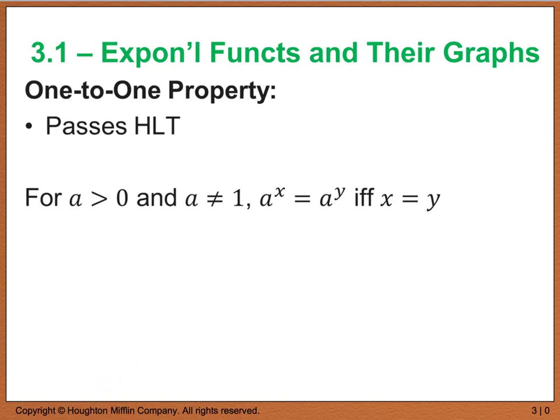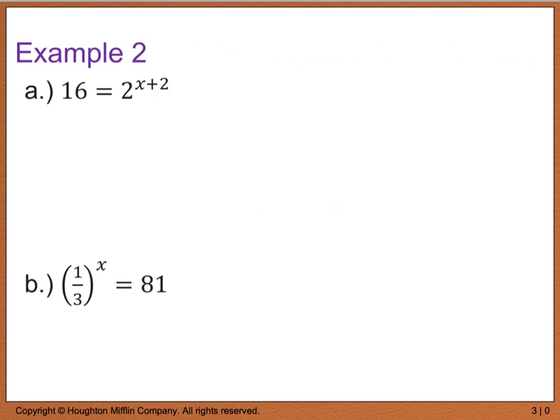So for every input, you will have exactly one output. And we can use this 1 to 1 property to help us solve different types of problems. And we're going to look at the, I just kind of wanted to touch base on this right here. Two exponents are the same if you have a to the x is equal to a to the y, and they're only the same if your exponents themselves are the same, and you have the same base.